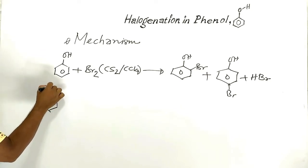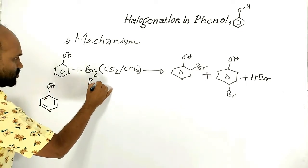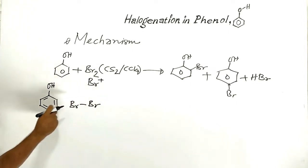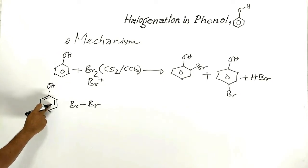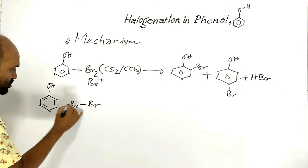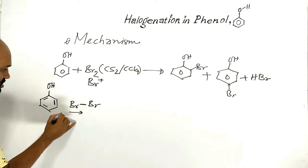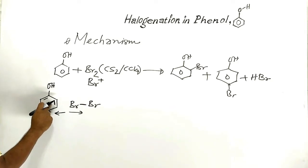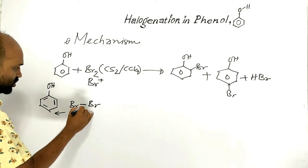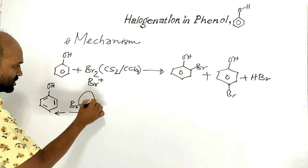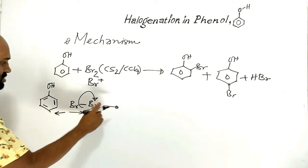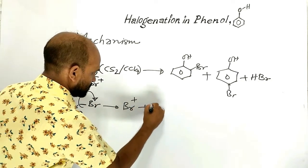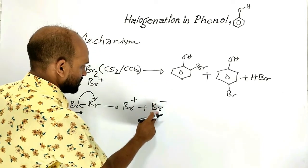Formation of bromine cation: when the bromine molecule comes closer to phenol, electron-electron repulsion occurs between the pi-bonded electrons of phenol and the covalently bonded electrons of the bromine molecule. As a result, this bond undergoes heterolytic fission, and from the bromine molecule, a bromine cation and a bromide ion are formed.